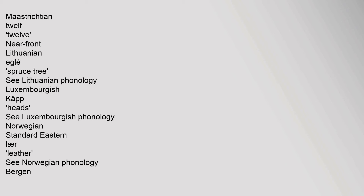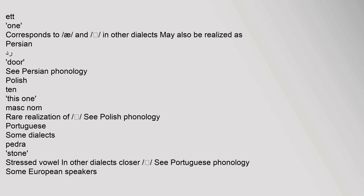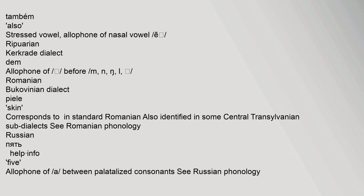Norwegian: standard Eastern — 'lær' (leather); see Norwegian phonology. Bergen: 'ett' (1) — corresponds to /a/ in other dialects; may also be realized differently. Persian: 'drive/dor'; see Persian phonology. Polish: 'ten' (this one), 'maska' (mask), 'nam' — rare realization; see Polish phonology. Portuguese: some dialects — 'pedra' (stone) — stressed vowel; in other dialects closer; see Portuguese phonology.